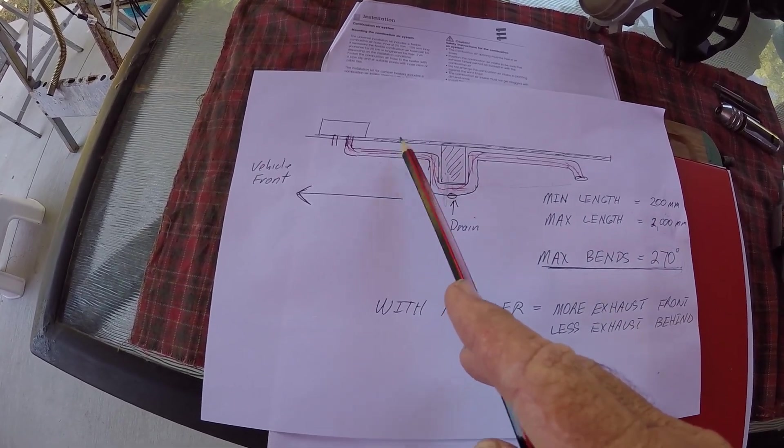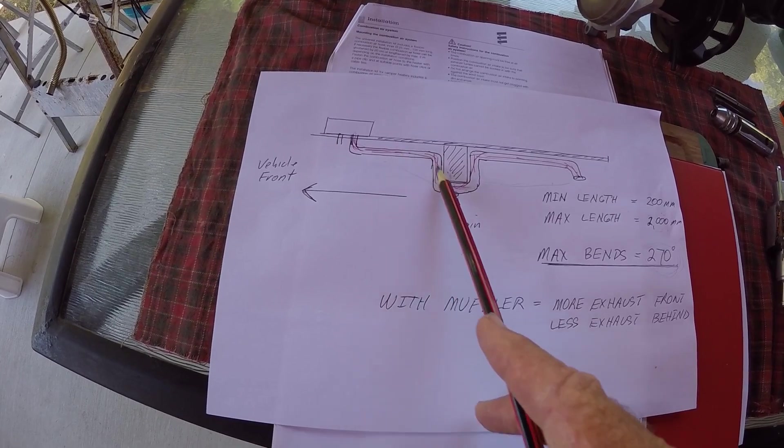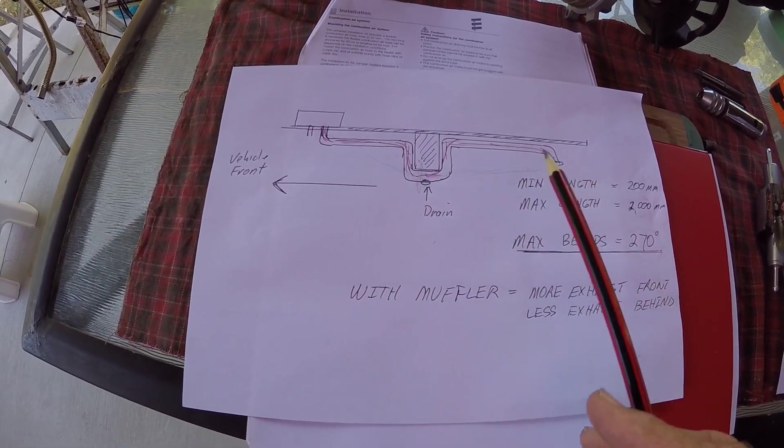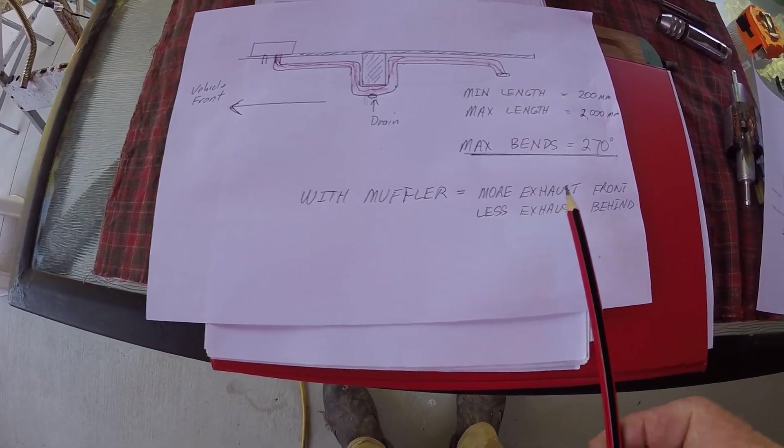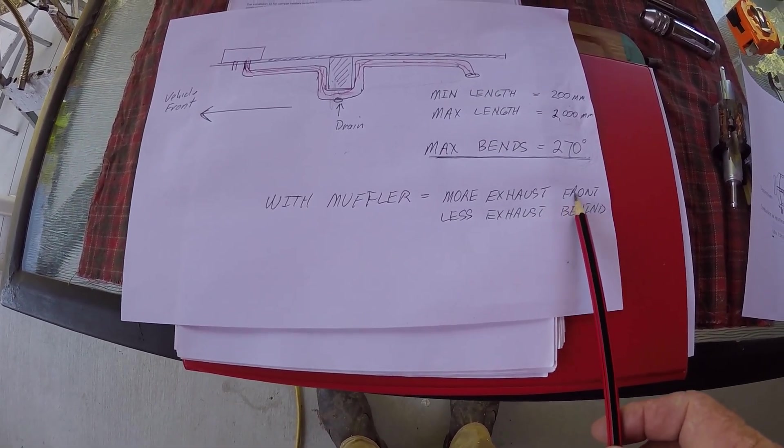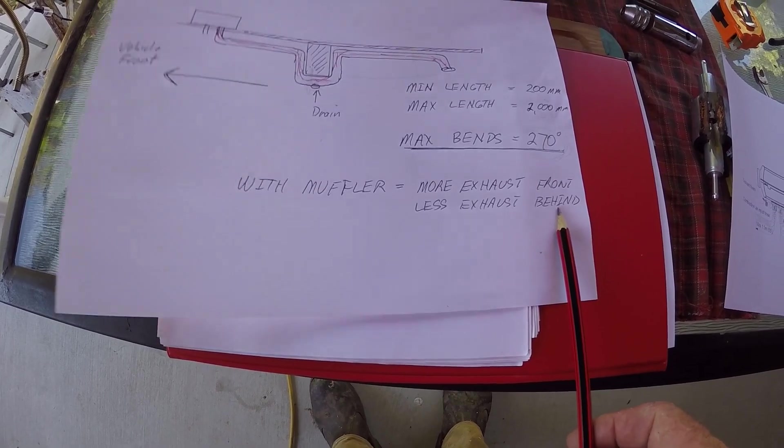If you have to have a low spot put a drain in it. And if you have to go more than about 500 millimeters then I recommend that you increase the size of the exhaust to allow that exhaust to escape. If you put a muffler in you've got to have more exhaust hose in front of the muffler and less exhaust hose behind the muffler.